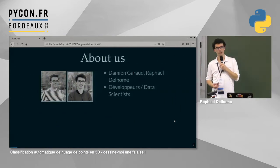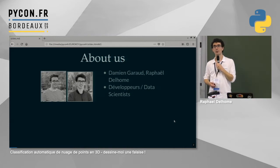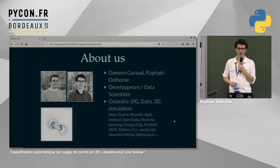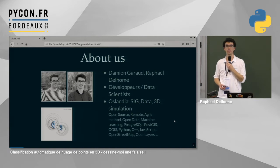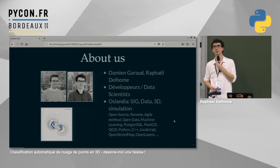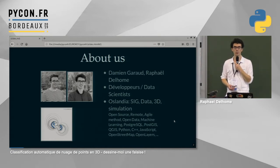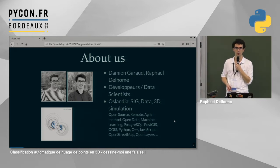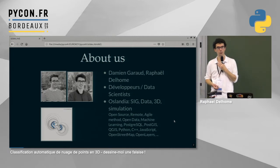Un petit mot à propos de nous : on a été deux principalement à travailler là-dessus, Damien Garraud et moi-même. On est data scientists chez Oslandia. Damien c'est le bordelais de l'histoire qui n'a malheureusement pas pu se déplacer. Oslandia c'est une société d'une quinzaine de personnes spécialisée dans le SIG — système d'information géographique. On fait quasi exclusivement de l'open source et on contribue à des logiciels comme QGIS. On utilise aussi Pandas, NumPy, des ETL comme Luigi, et nos technos principales tournent autour de PostgreSQL, PostGIS, Python et C++.